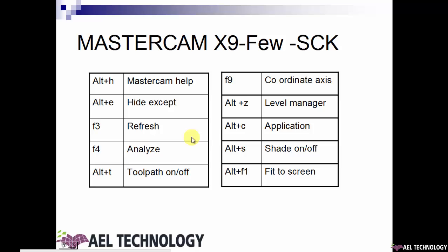If you are working on a toolpath and want to toggle the display of the toolpath, use Alt+T. When you press F9, you will be able to see the coordinate axis in dark brown color. When you press Alt+Z, it takes you to the Level Manager. When you press Alt+C, it takes you to C-Hooks where you can select any sub-application that you need to run.